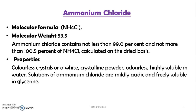Properties: Ammonium chloride is colorless crystals or white crystalline powder, odorless, and highly soluble in water. The solution of ammonium chloride is mildly acidic and it is freely soluble in glycerin.